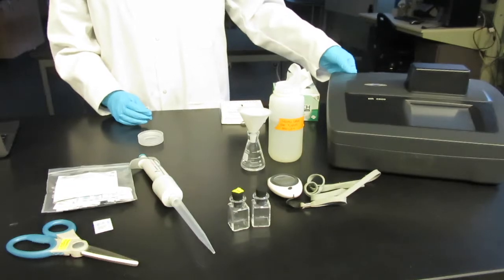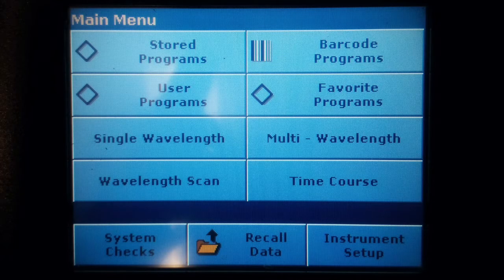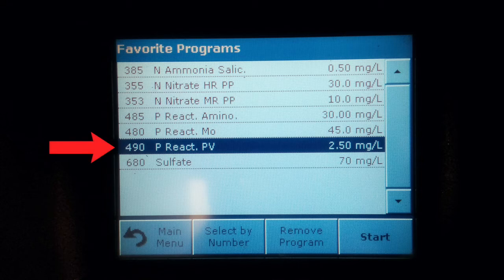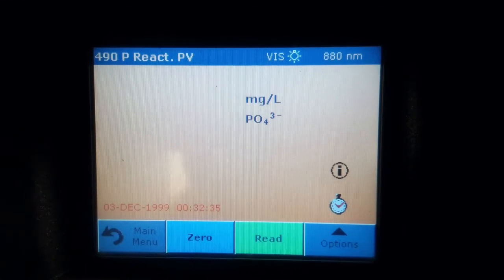Turn on the spectrophotometer, select stored programs and choose program number 490, the p-reactive PV, and allow to warm up.